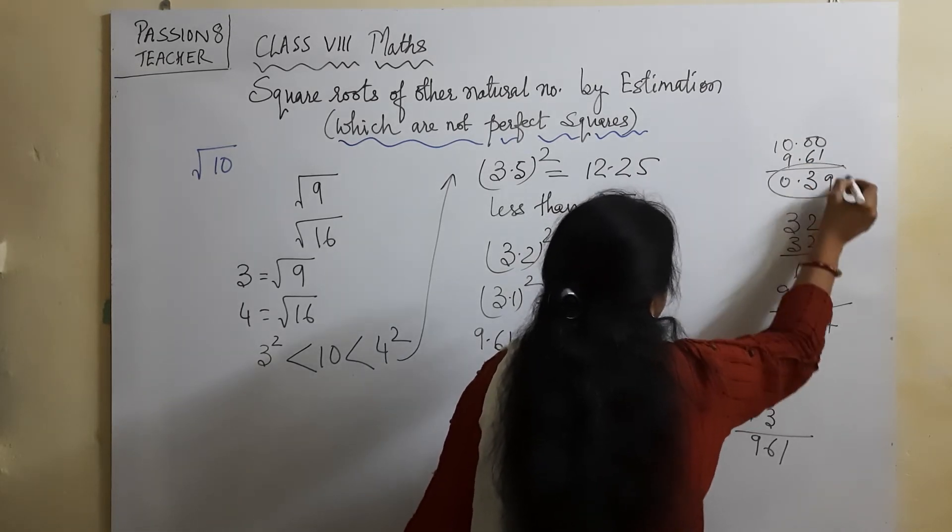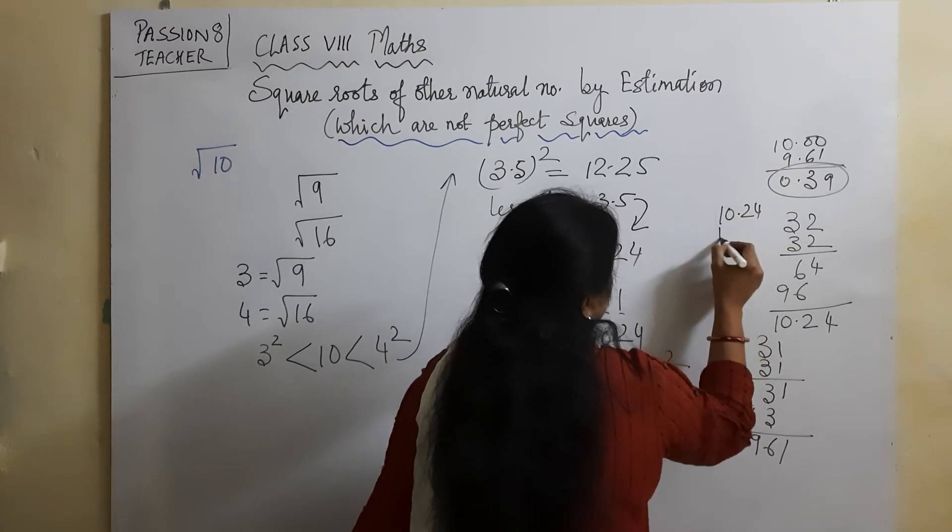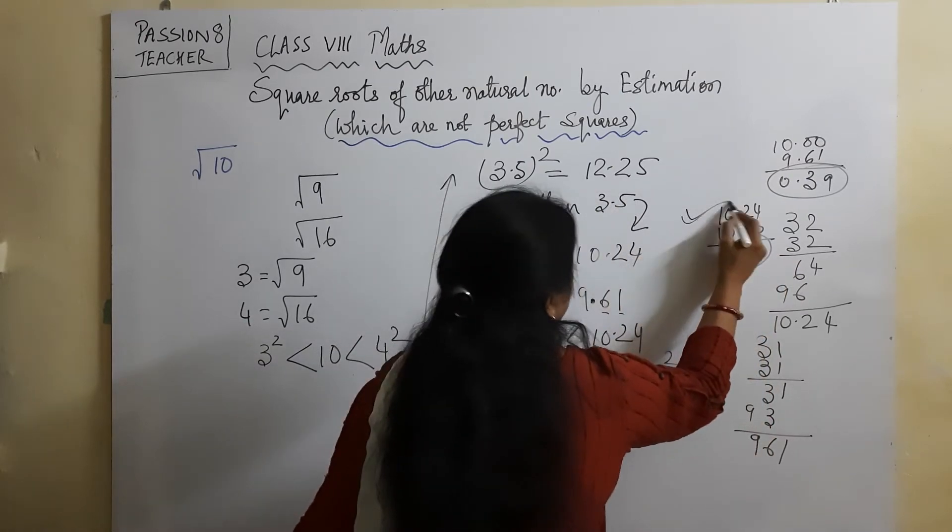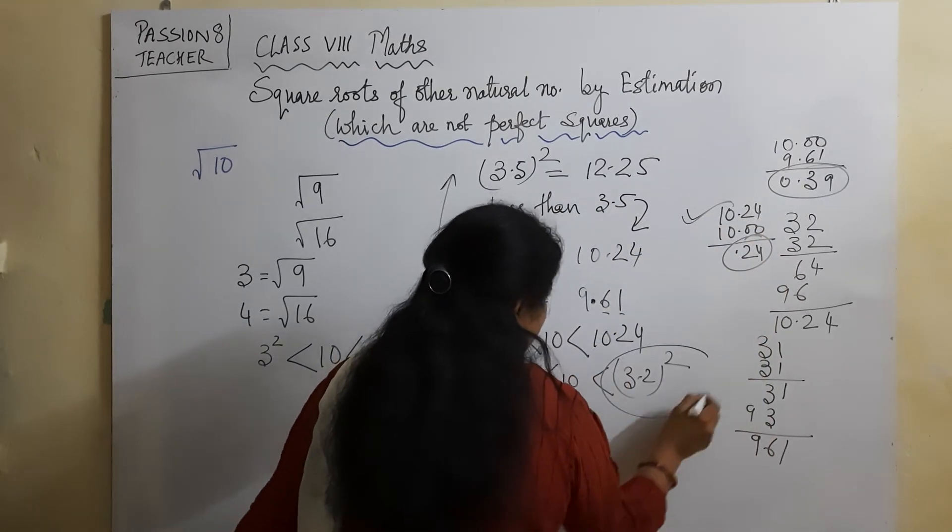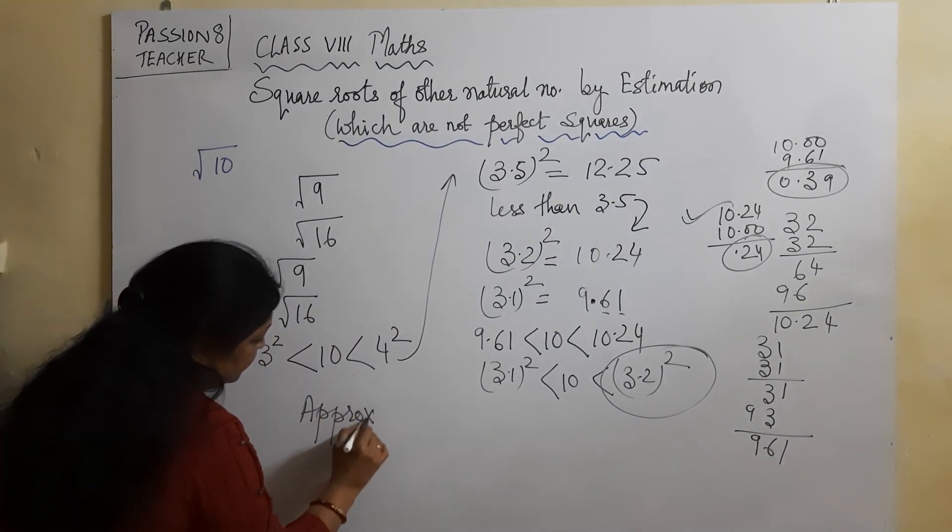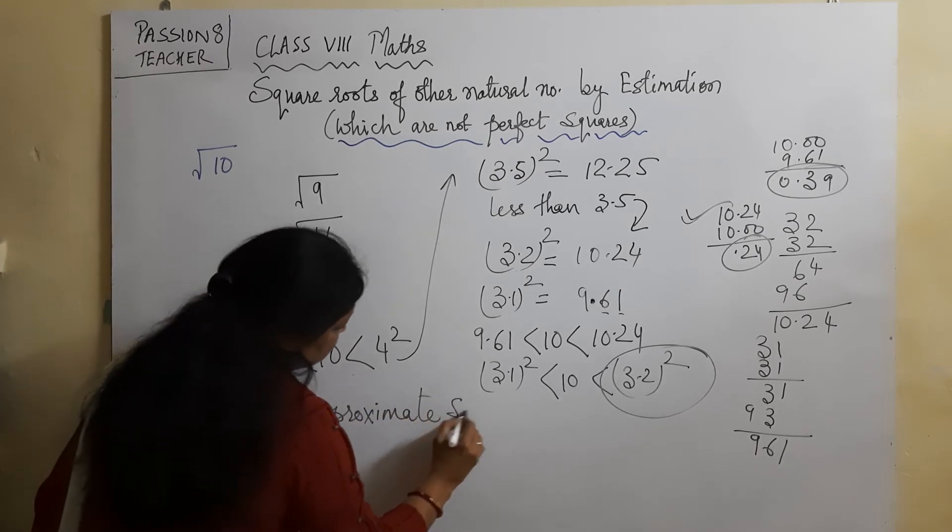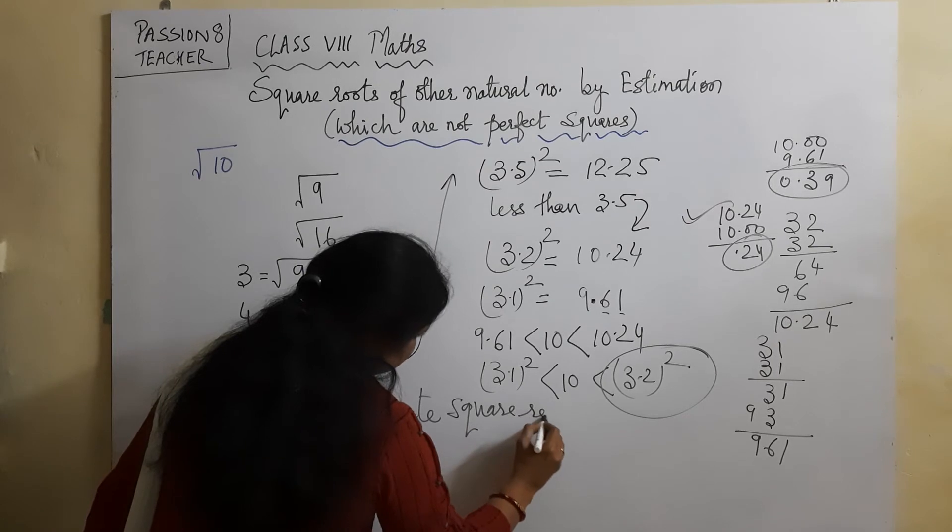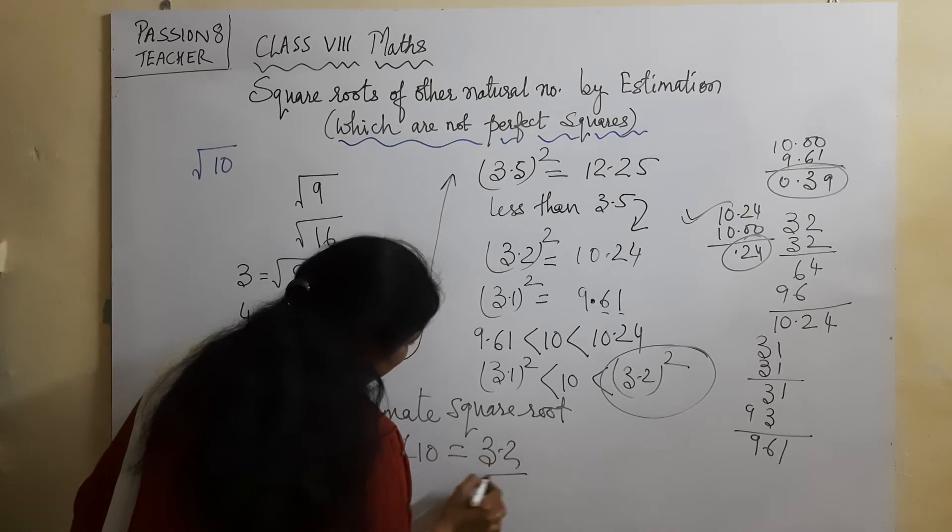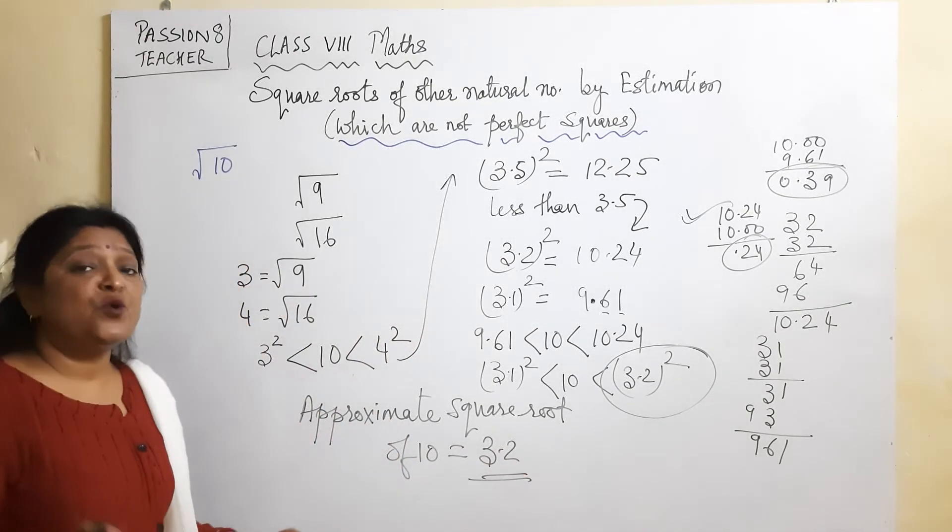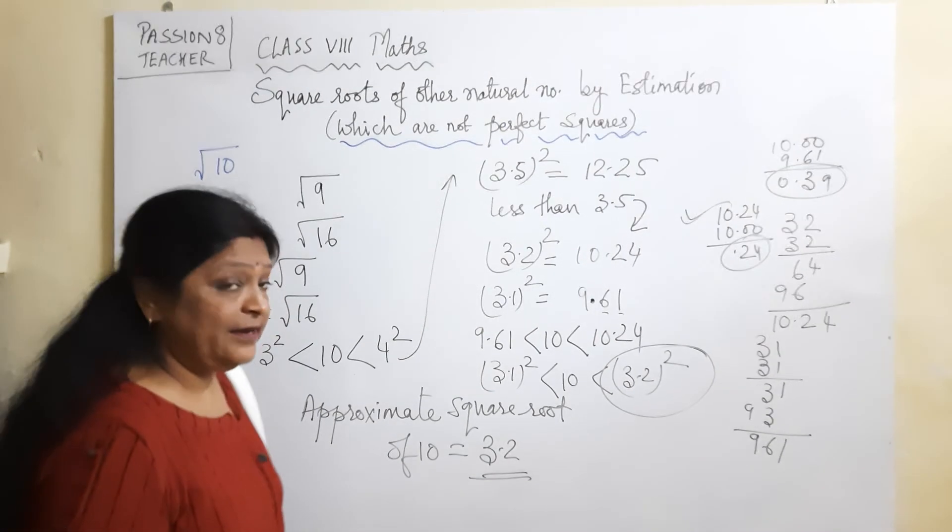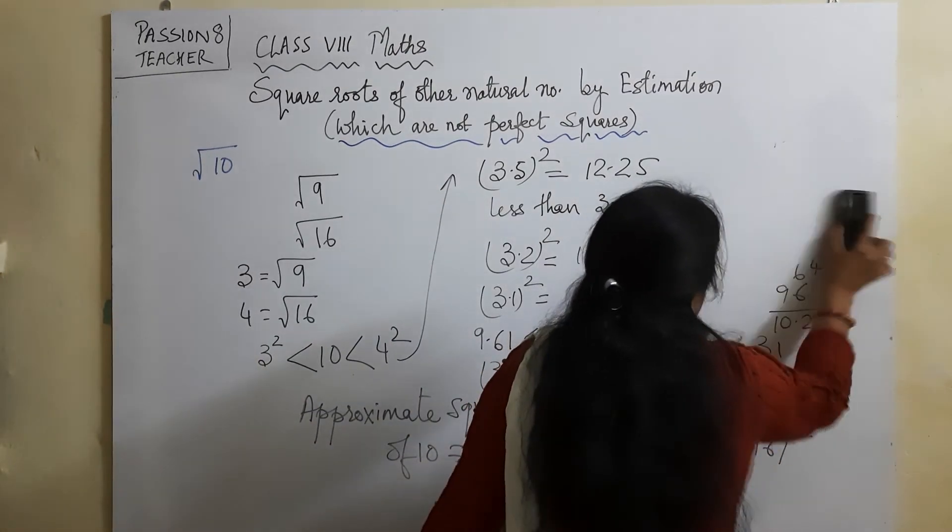If I do 10 minus 9.61, this is more difference. But if I do 10.24 minus 10, this is 0.24. So which is closer? 10.24 is closer. So approximate square root of 10 is 3.2 approximate. We didn't apply any method, but we gave an answer, approximately 3.2. Now is this answer correct or wrong? Let's verify it.